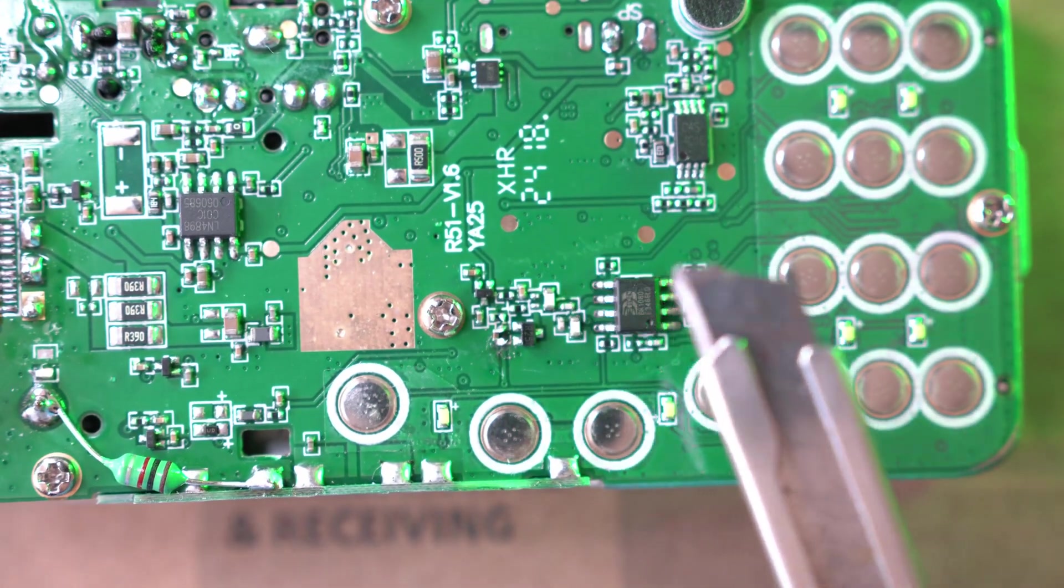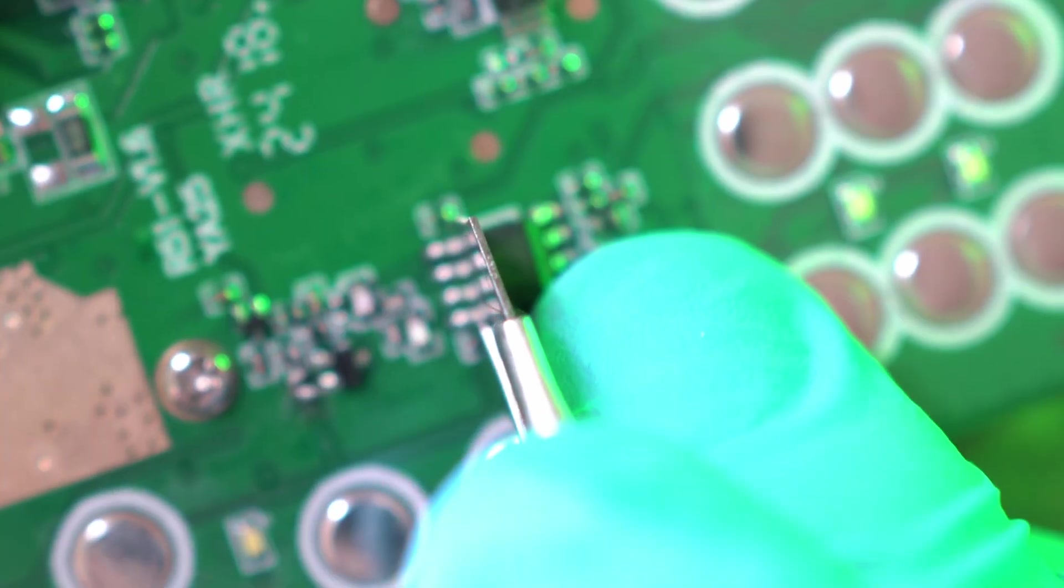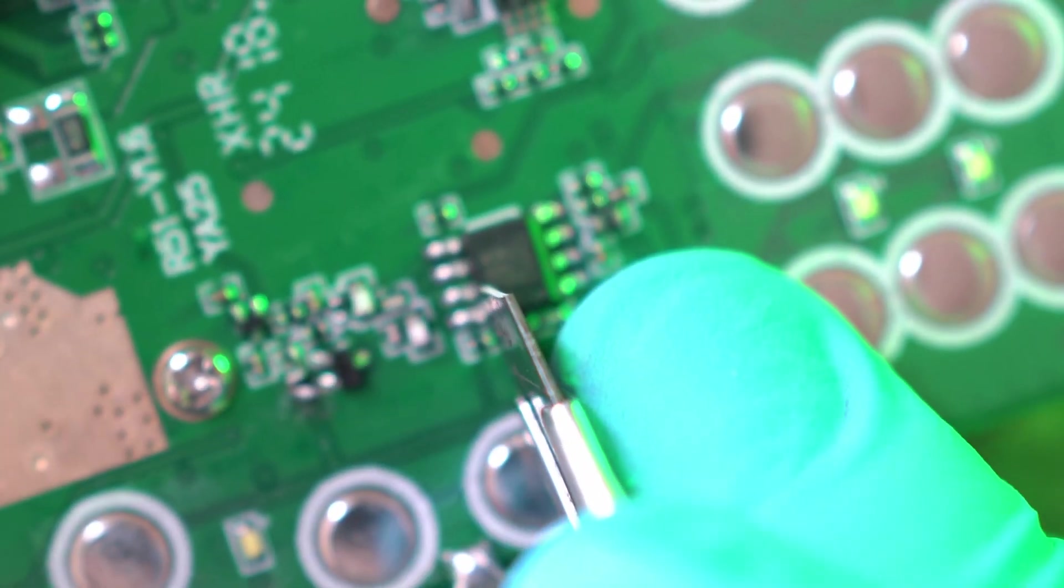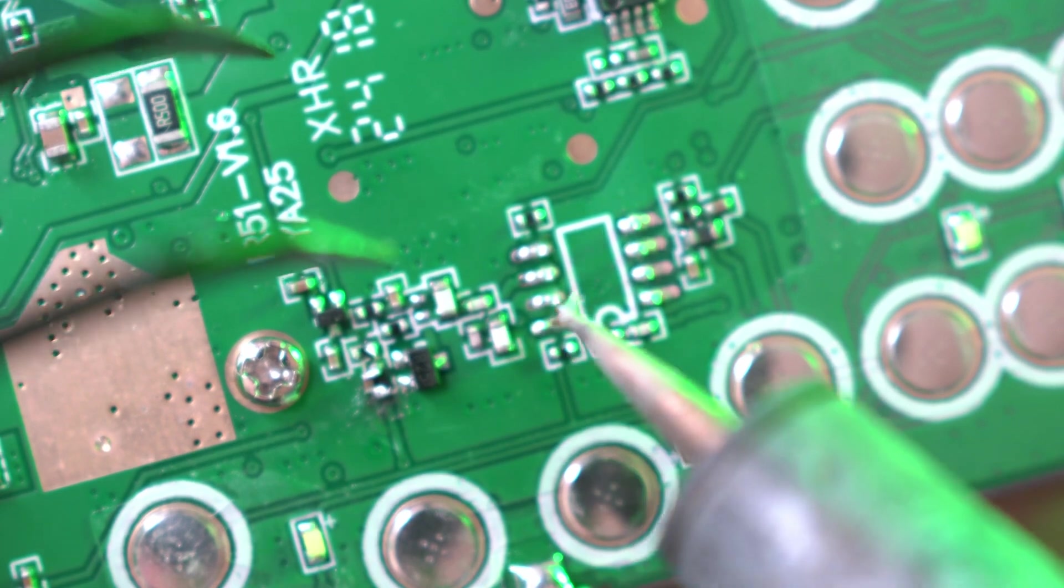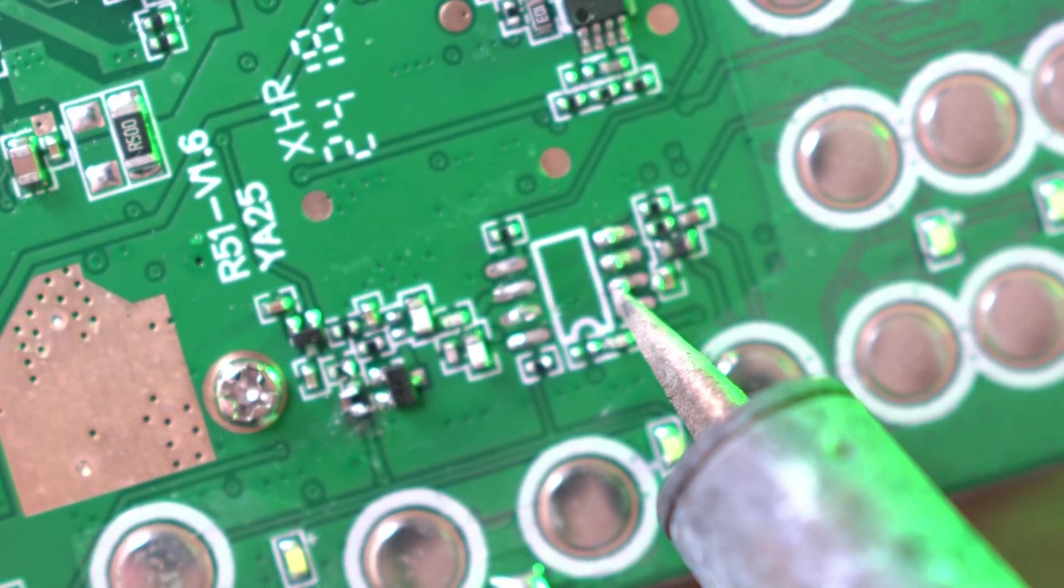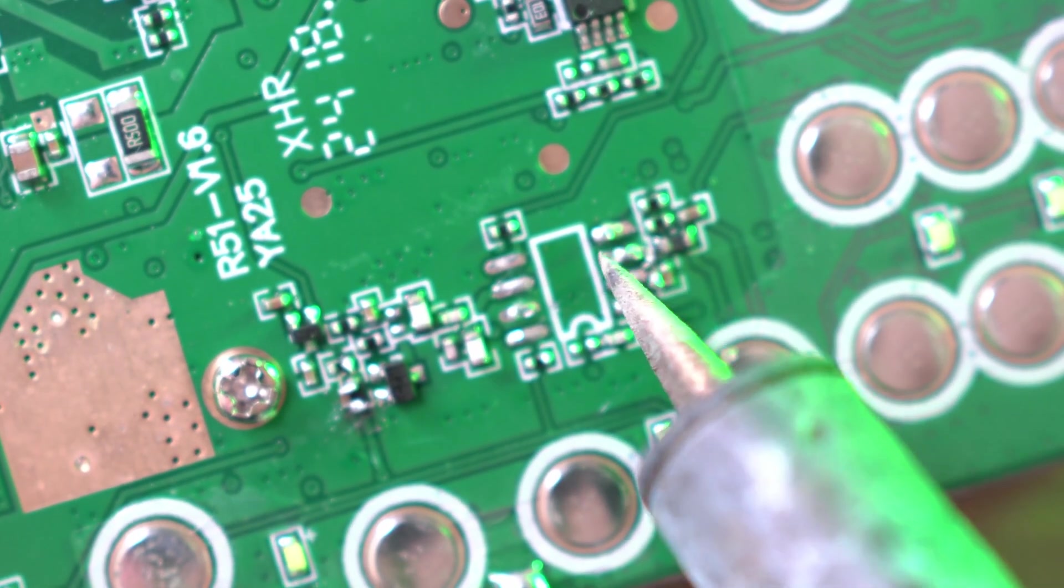To remove this 8-legged chip, easiest is to cut all 8 legs and desolder legs one by one. Like so. Again, be very careful as it is easy to damage surrounding components.